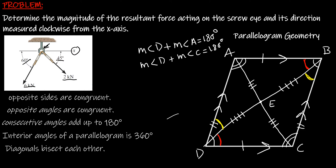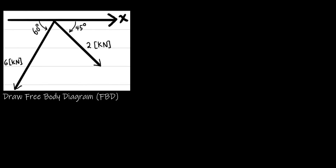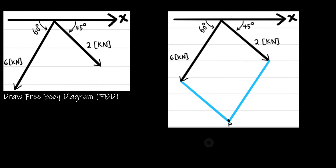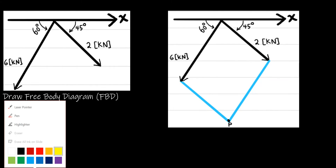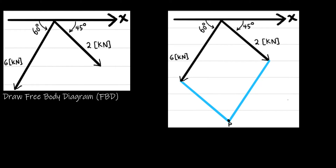Now let's draw a free body diagram. Drawing a free body diagram is important because it simplifies the problem and helps us visualize it better. Always make sure your first step is to draw a free body diagram. Next, we create a parallelogram: the force vector of magnitude 2 kilonewtons at 45 degrees is parallel to one side, and the force vector of 6 kilonewtons at 60 degrees is parallel to another side.